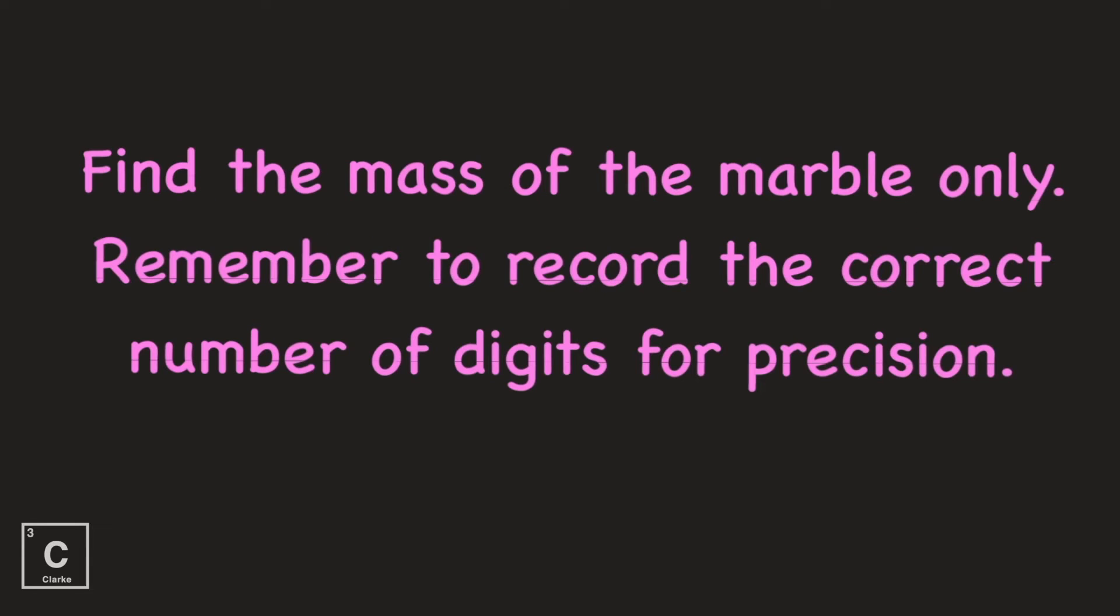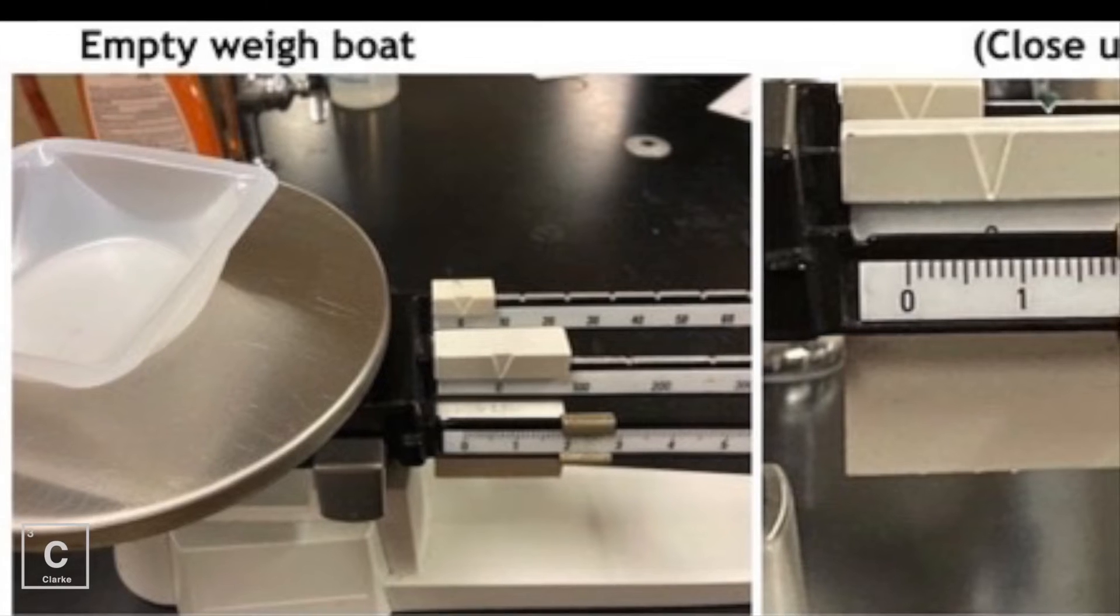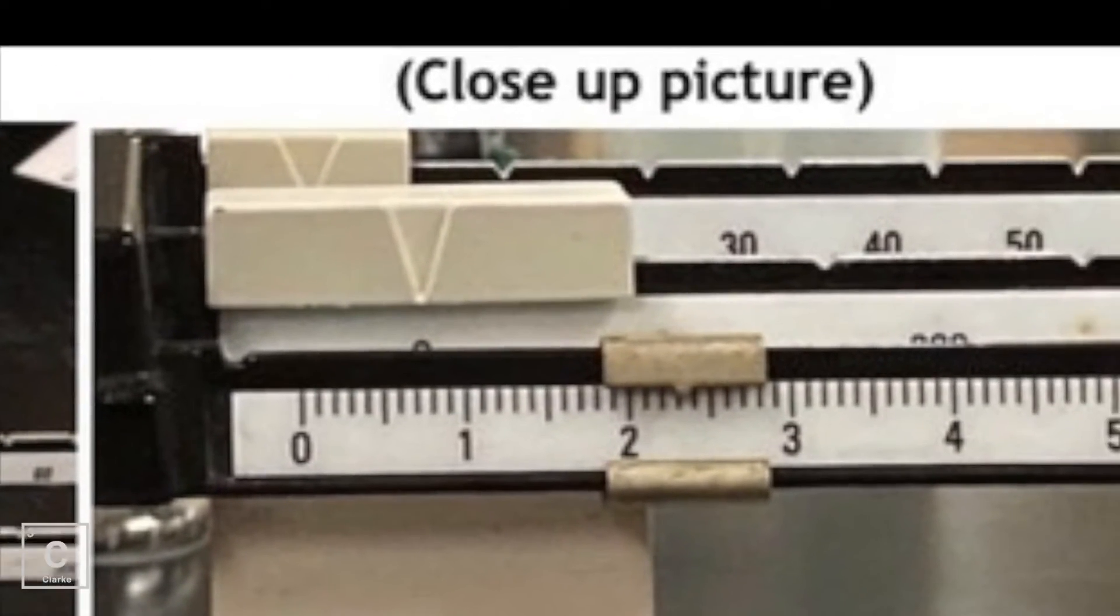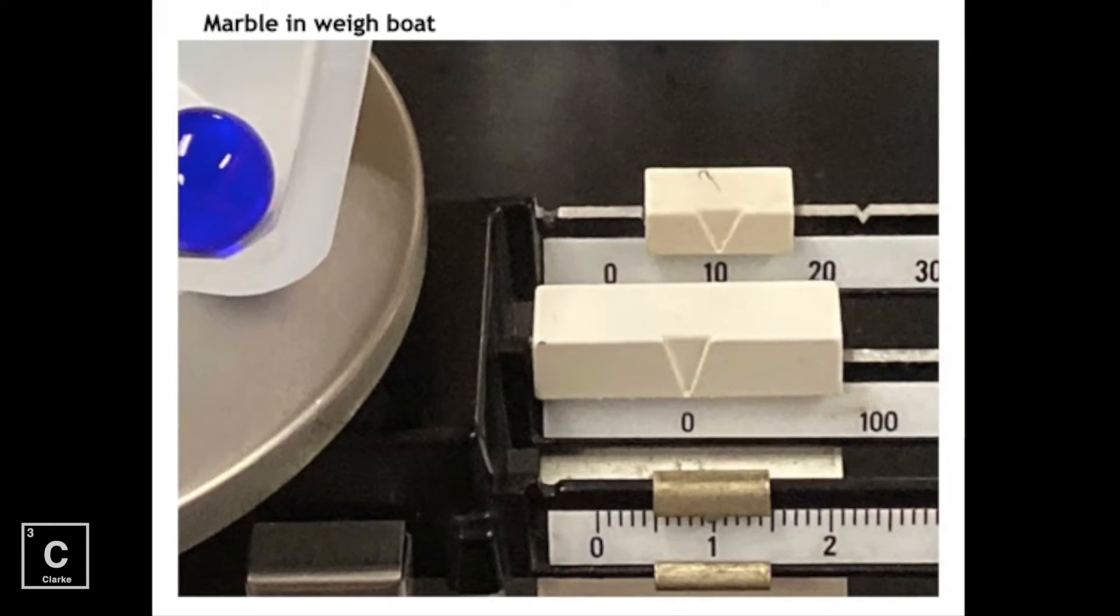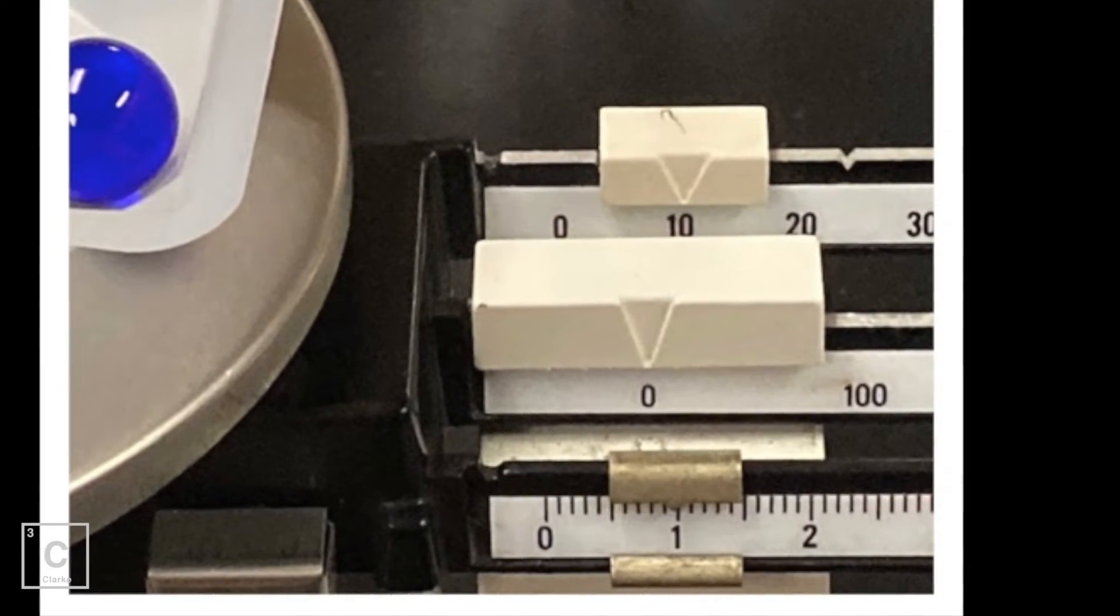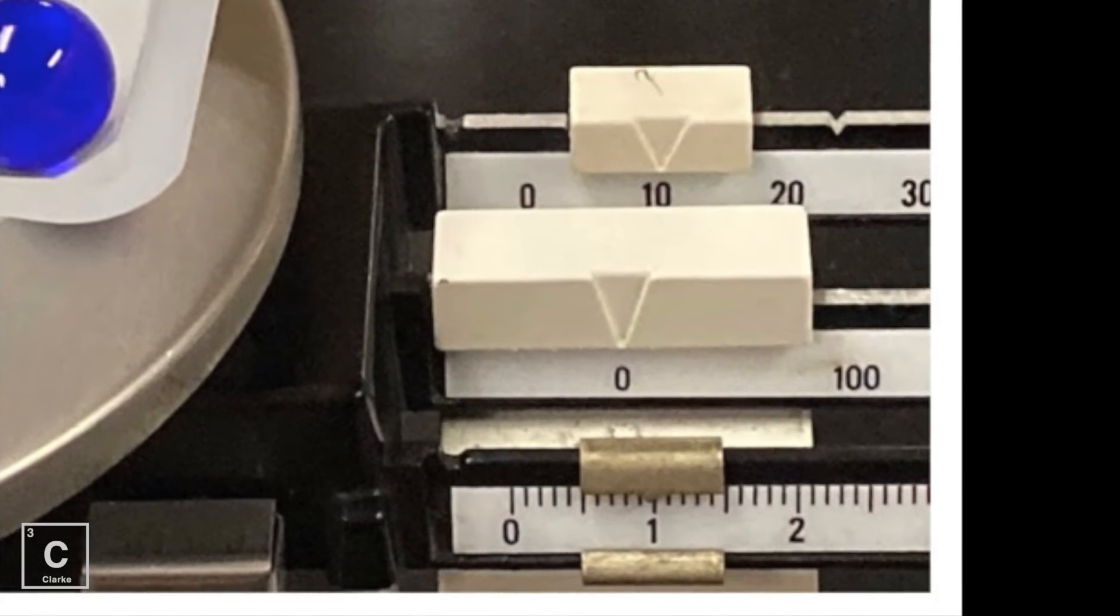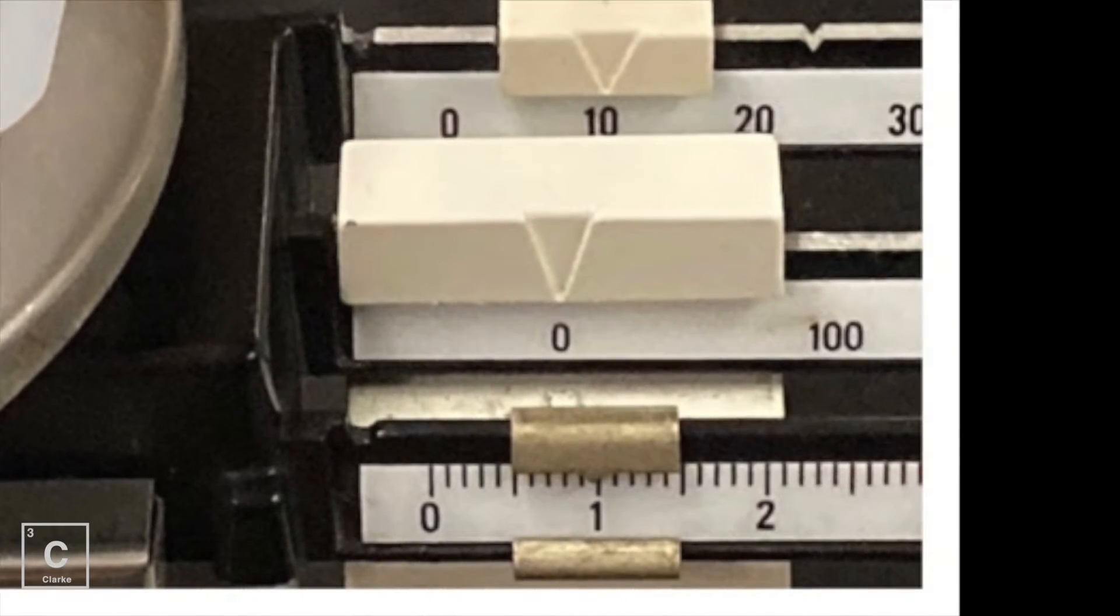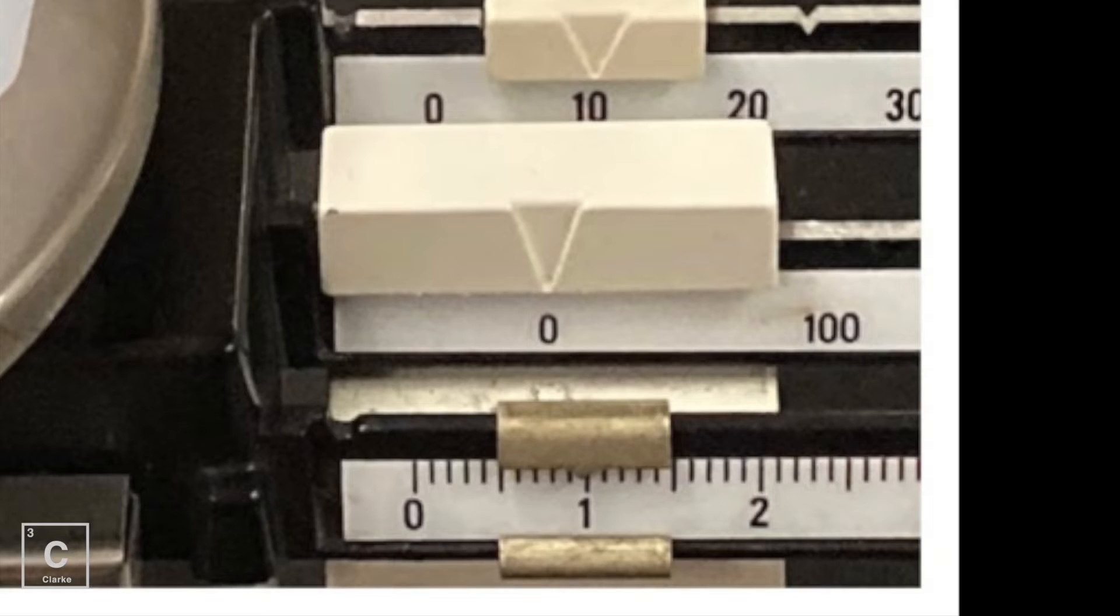Find the mass of the marble only. Remember to record the correct number of digits for precision. When subtracting to find the mass of the marble, make sure you're remembering the rules for subtracting using sig figs. Are y'all sick of me reminding you about sig figs?